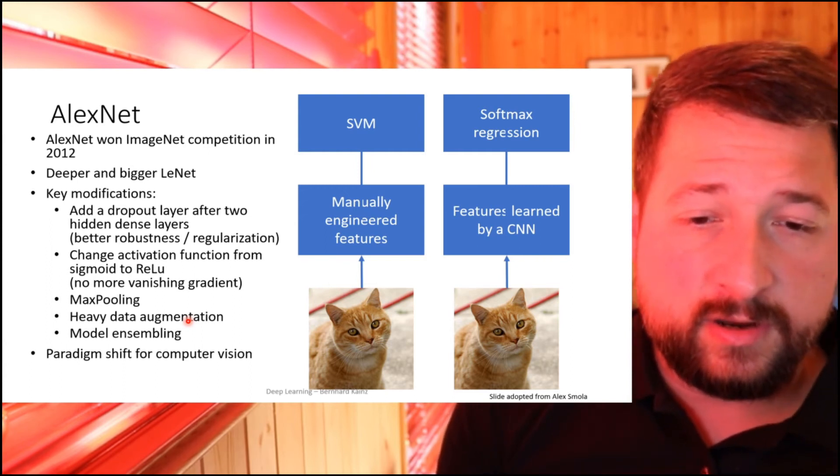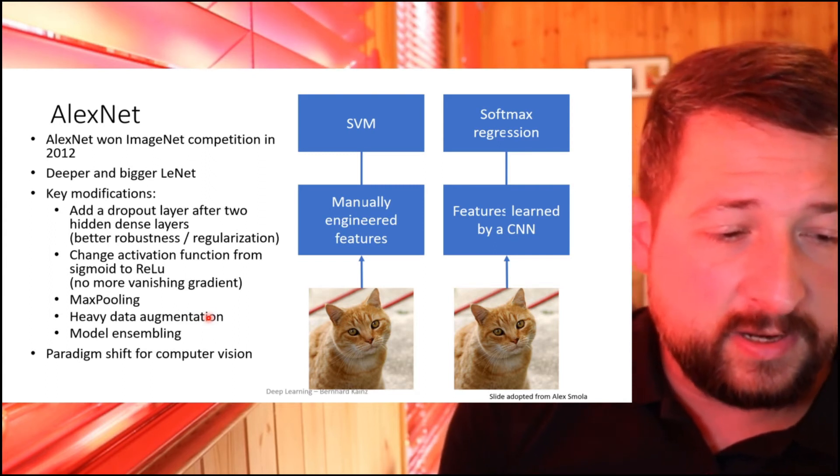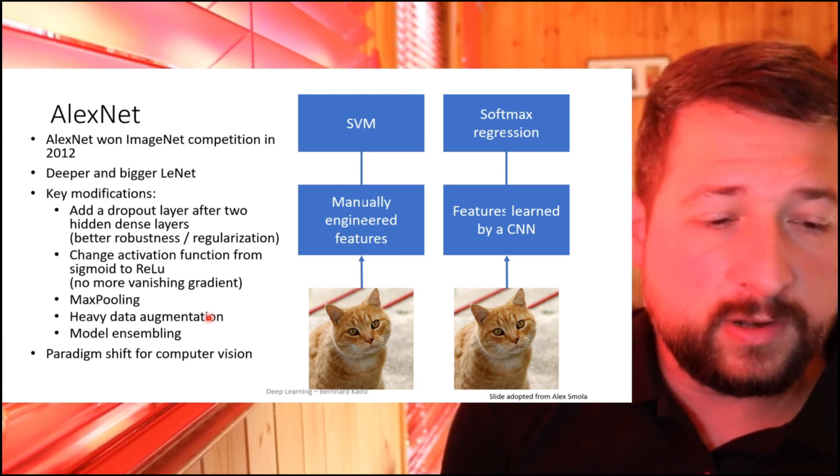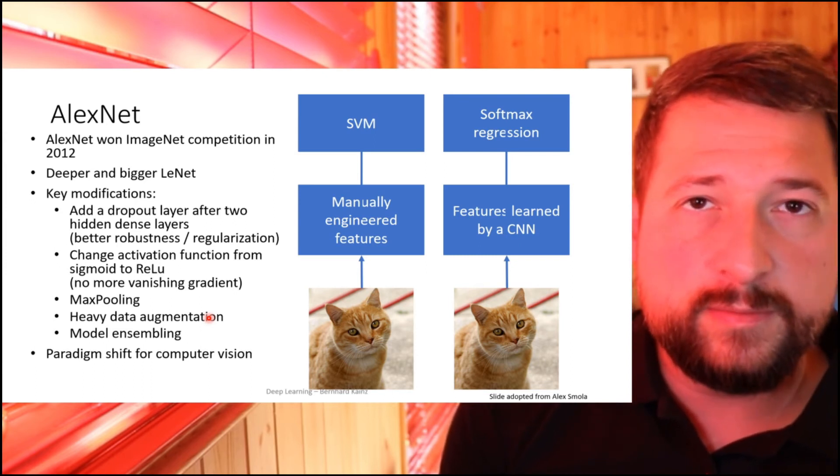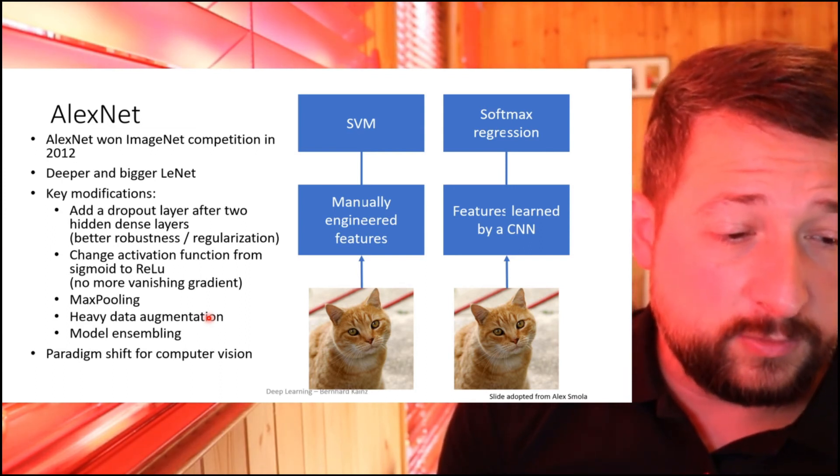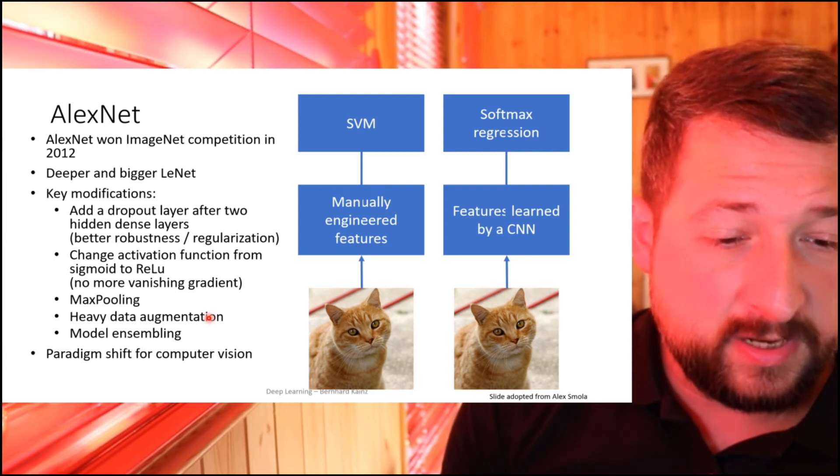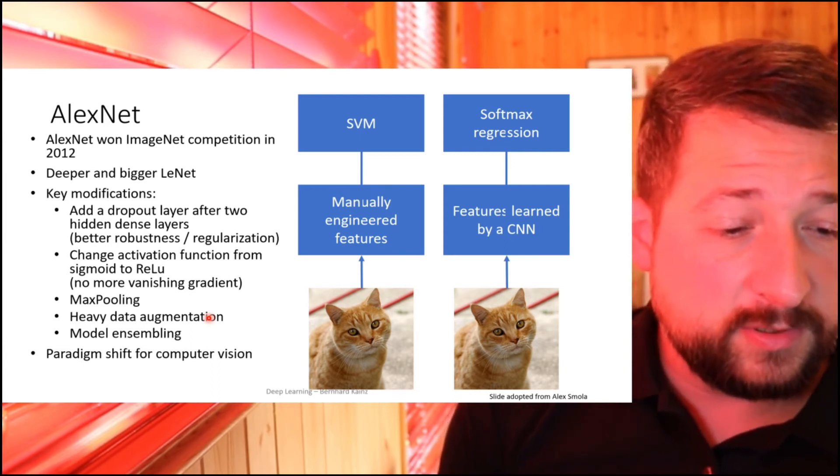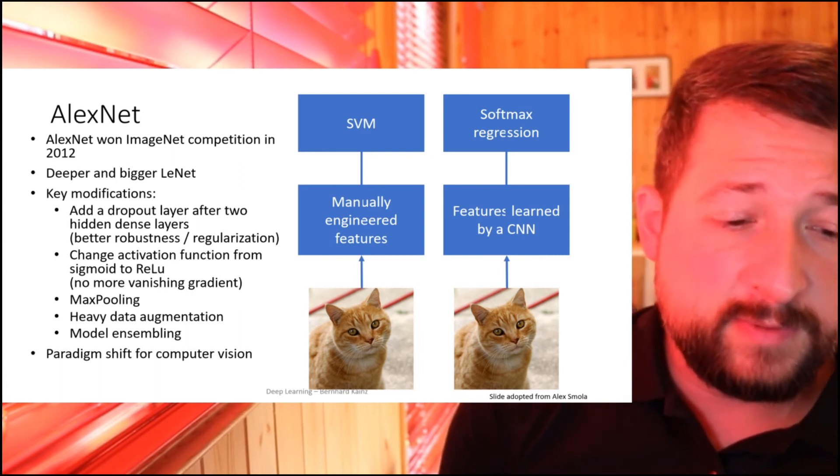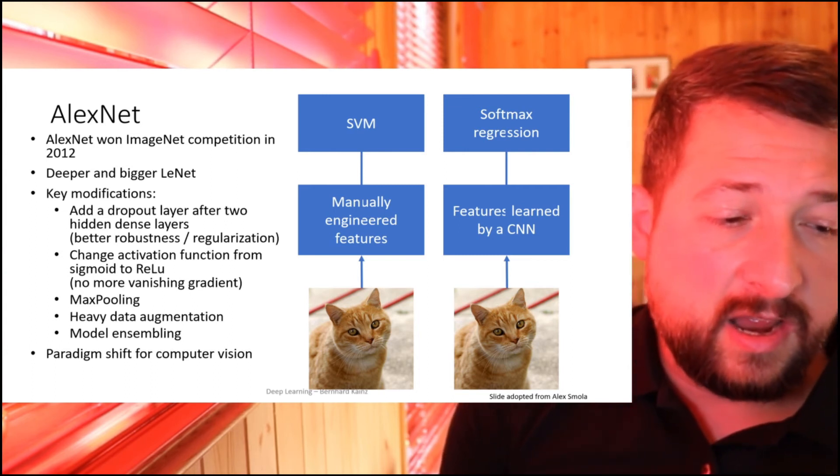To eventually win this challenge, they also had to use heavy data augmentation, which we will discuss in a future video. For example, cropping and shifting, rotation of the inputs, together with model ensembling. So they trained multiple versions of their model and then ask these multiple versions for an input about their prediction, and then they build the average, basically a majority vote for the output. This makes usually classification approaches more robust towards perturbations. All of this led to a paradigm shift in computer vision, and after computer vision, people went on and applied these networks to speech recognition and natural language processing, text generation—very popular examples recently like GPT-3—and a lot of other things.